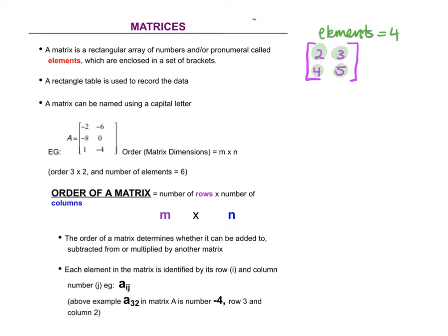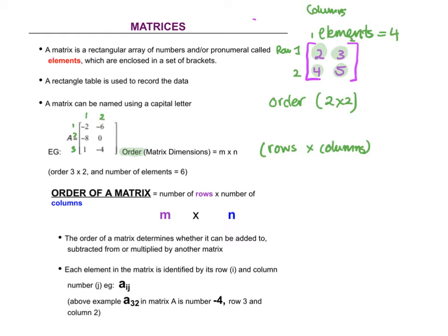When we talk about matrices, we often talk about their order. We say how many rows it has by how many columns. If you look here, this one has two rows and two columns, so the order is two by two. Just remember rows are written first. Up here in this example A1, you've got three rows and two columns, so it's a three by two, and it has six elements.